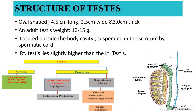The parenchyma is divided into two compartments: the seminiferous tubular compartment and the interstitial compartment. The seminiferous tubular compartment contains Sertoli cells and spermatogenic cells; its main function is production of sperm. The interstitial tissue contains Leydig cells, which produce the male sex hormone, i.e., testosterone.